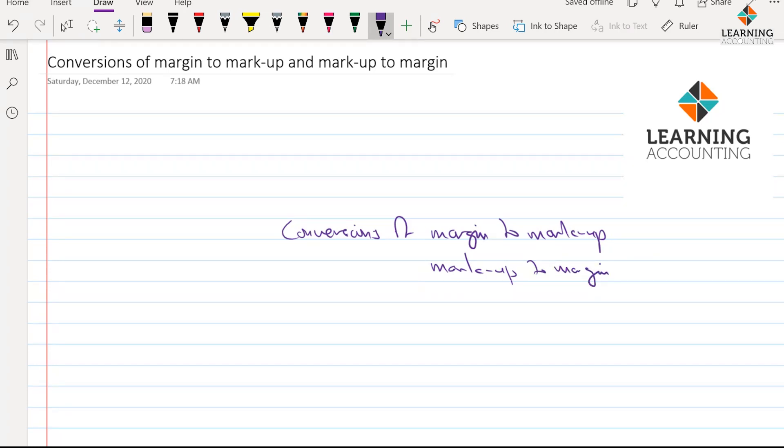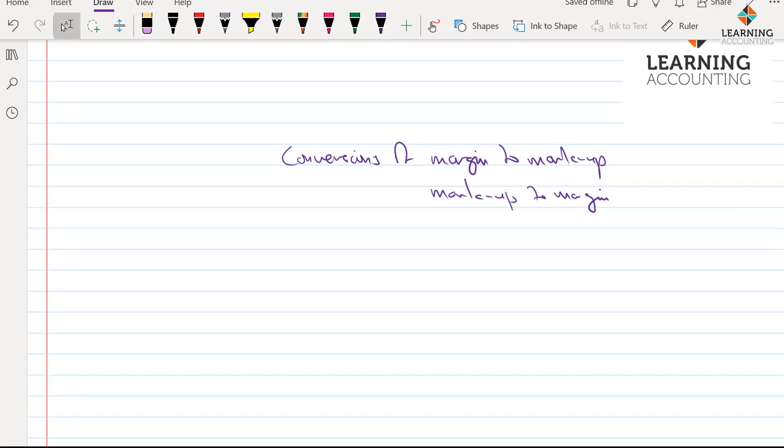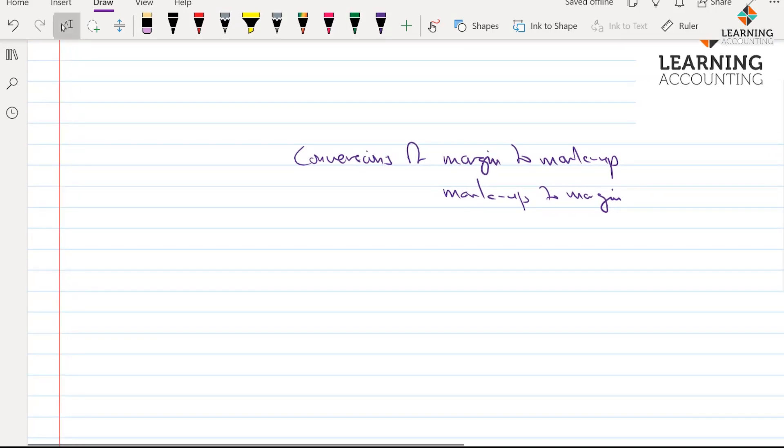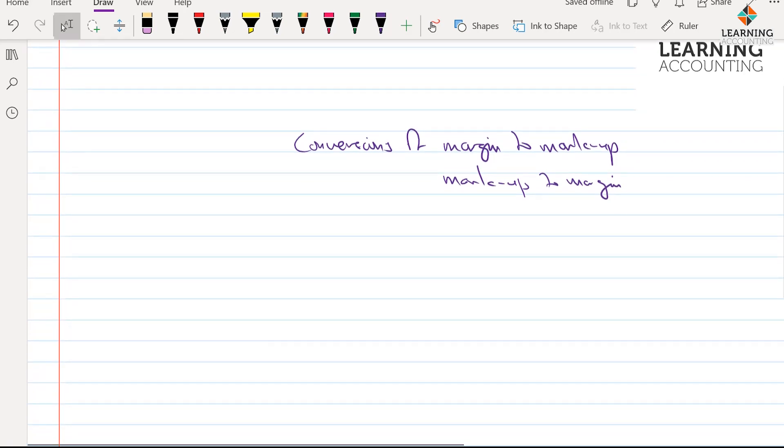Now, this has always been a challenge for students most of the time, especially when they are faced with questions that probably give them some information and they're trying to figure it out, especially topics that relate to incomplete records where you'd have to be looking for some of those informations or topics like group accounts where you have to do calculations for provisions for unrealized profit and so on. Now, what do I mean by margin to markup or markup to margin? So let's look at it first from this point of view.